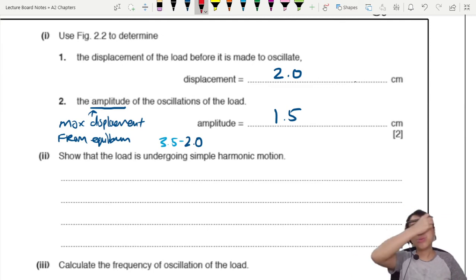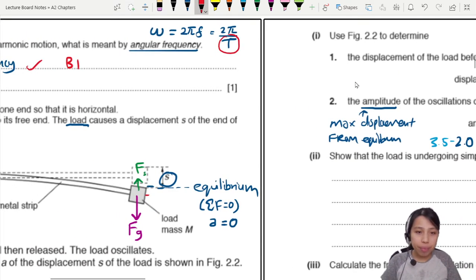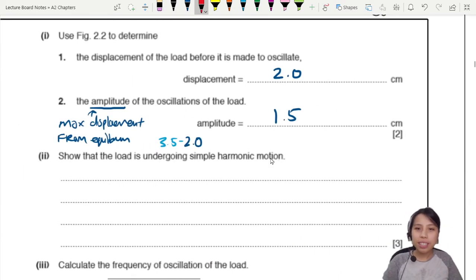So train yourself to read the graph, especially when you have tricky displacements like this. This displacement from the top, this S here, is going to be our 2.0 cm initial before you start oscillating up and down.